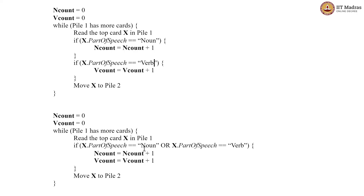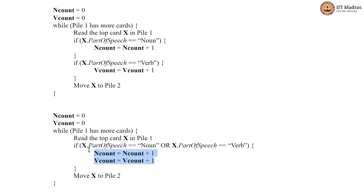Now if we tried clubbing these two if statements with an OR — suppose the condition is: x dot part of speech is noun OR x dot part of speech is verb — and then we do both increment operations inside that one block, the problem is that if a word is a noun, you get into the if block and you also increment vcount. Likewise if a word is a verb, you increment ncount along with vcount. What you get at the end is that ncount and vcount will both come out equal because they are both being simultaneously incremented each time — you get the total sum of nouns and verbs for both variables. That is not what is happening in the original code where ncount increments only for nouns and vcount only for verbs.